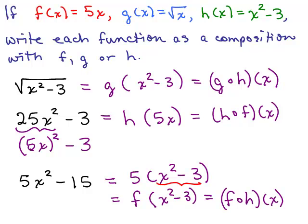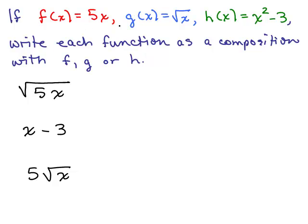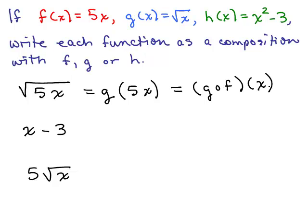These are pretty challenging. You might want to go back and try these again. Now let's see if you can do a couple more on your own using the same three functions. The first one is √(5x). The overriding thing is the square root of something — that looks like g of something. So this is g(5x). And 5x is f(x). So this is g(f(x)).